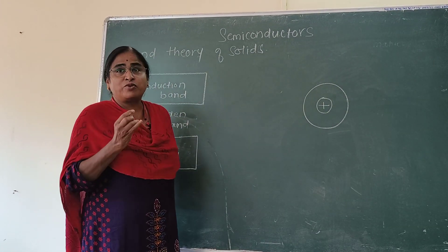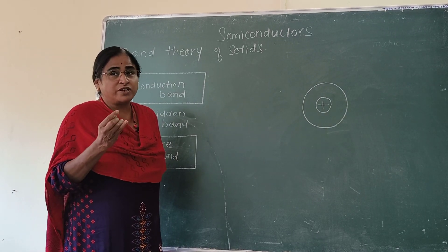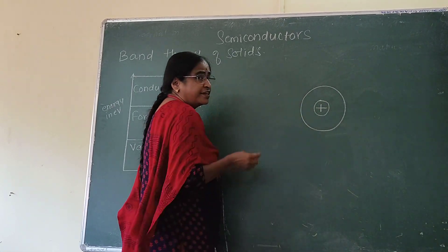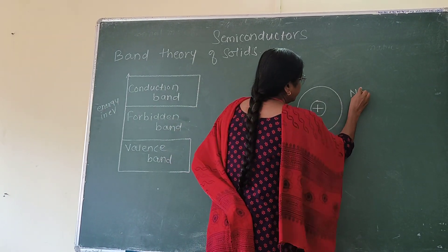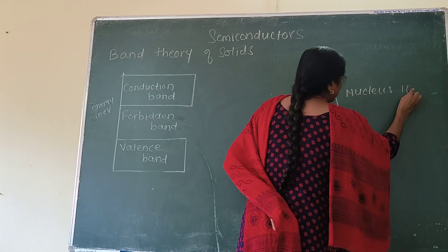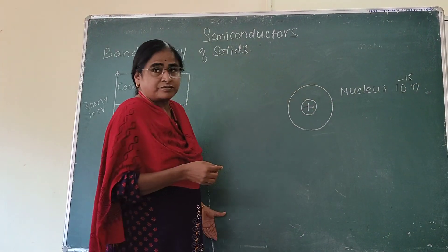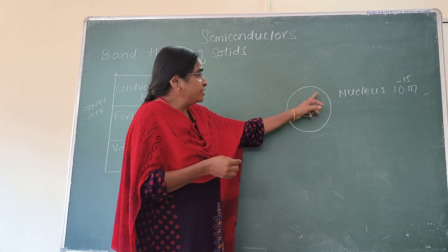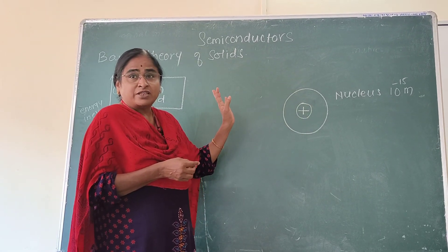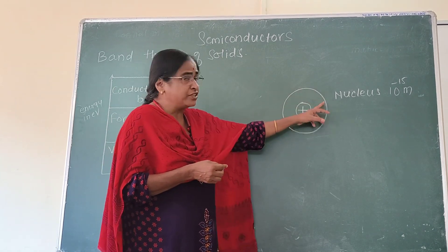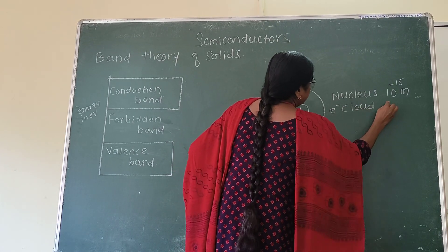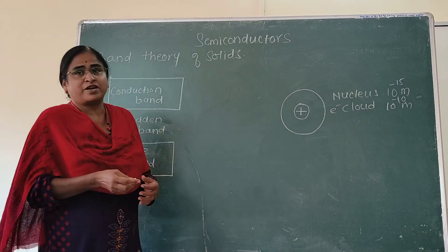Within the atom we have positive charges, we have electrons, we have protons, we have neutrons, and all the positive charge within the atom is concentrated at the center — this portion is called the nucleus. The diameter of this nucleus is of the order of 10 to the power minus 15 meters. All the negative charge, that is all the electrons within the atom, are systematically distributed around the nucleus, revolving in definite orbits. This region where electrons are revolving is called the electron cloud, and its diameter is of the order of 10 to the power minus 10 meters.